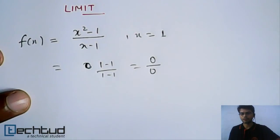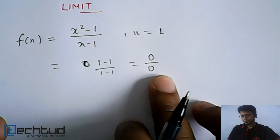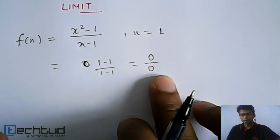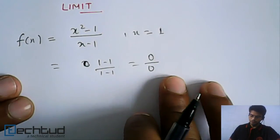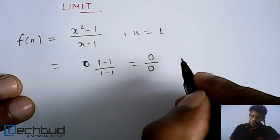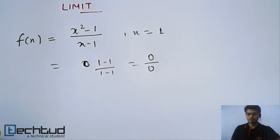We cannot say it's 0 or infinity. So basically this form 0 upon 0 is indeterminate form. We cannot say it as equal to 0. Now, it means that value of this function doesn't exist when x equal to 1.